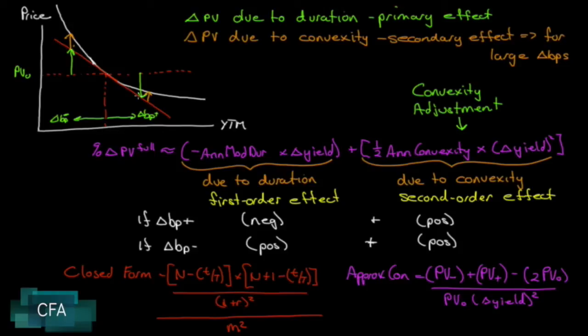So here's what it looks like in total, and it's actually not that intimidating. The percentage change in the full price of the bond is—and notice this is not an equal sign, it's approximately—part one: the annual modified duration times the change in yield. We've already seen this.